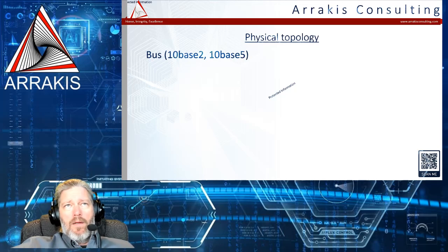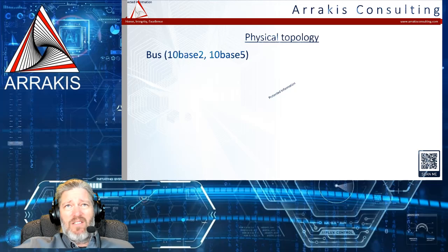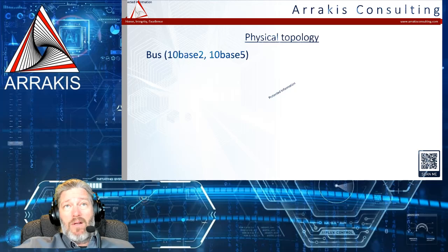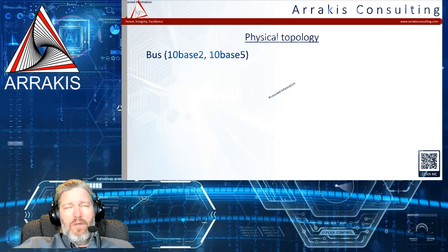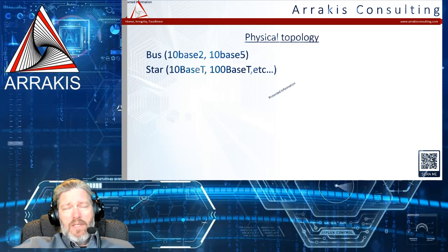Physical topology is basically how the network is set up. Old school technologies include 10 Base-2 and 10 Base-5 — also known as thick net, where the cable is about as big around as a thumb and very hard to manipulate. If you're dealing with thick net in your environment, you might want to consider a different job. However, it is testable content, and it uses vampire taps.